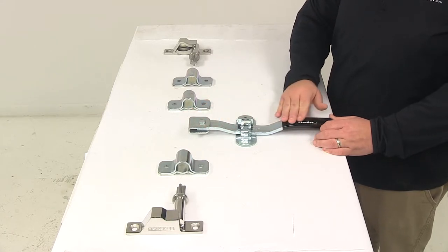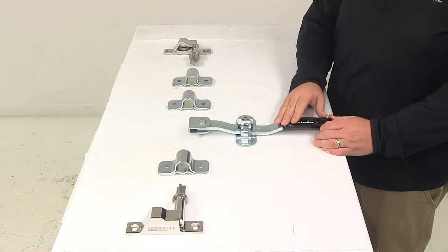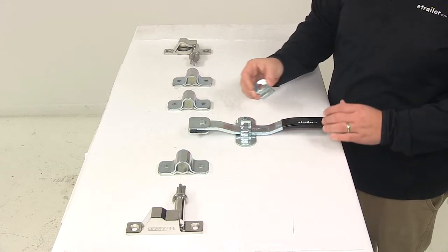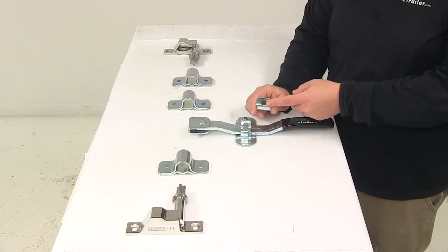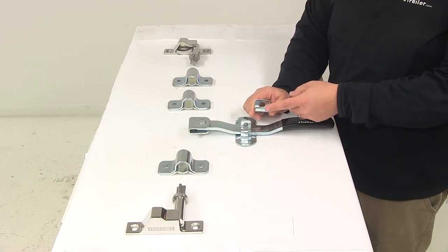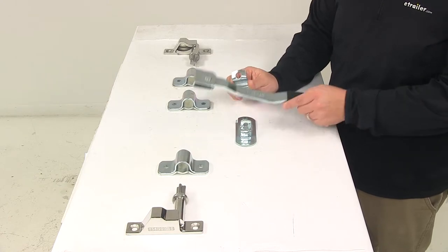The handle has a nice coated grip on it for an easy grip design. It's got the keeper here. That way you can lock it shut if you choose to. The padlock or seal eye diameter is a half inch. That's a two piece construction right there.